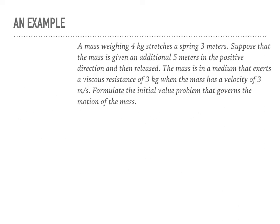Now let's look at an example. A mass weighing four kilograms stretches a spring three meters, so the weight is four newtons and m = 4. The stretch is three meters, so using this information we can find the spring constant: k = weight / elongation = 4/3.